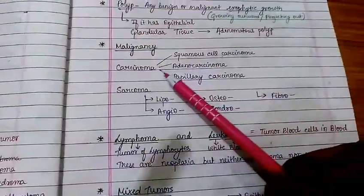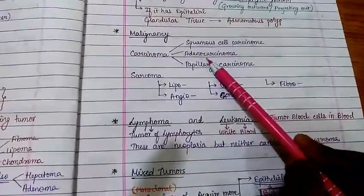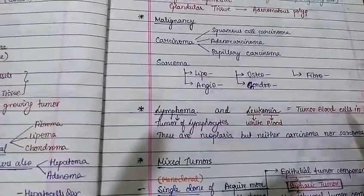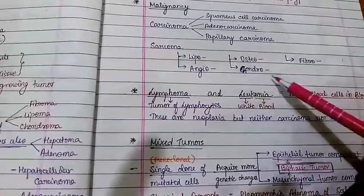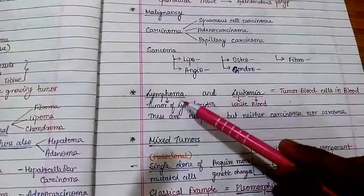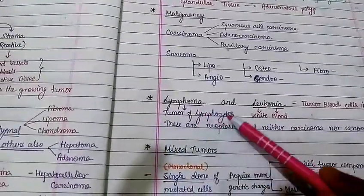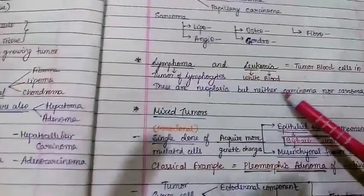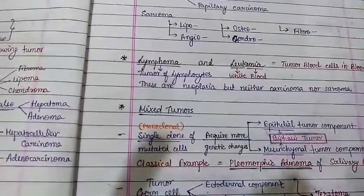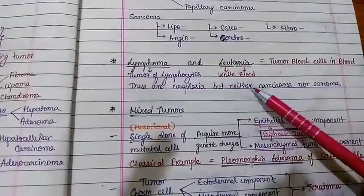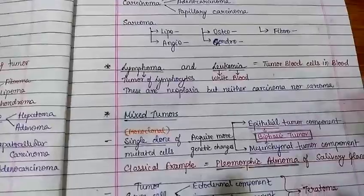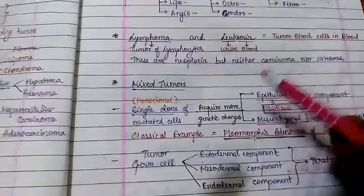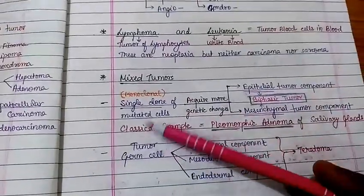For malignancy: carcinoma covers epithelial malignancy and may be squamous cell carcinoma, adenocarcinoma, or papillary carcinoma. Sarcoma covers mesenchymal malignancy — liposarcoma, angiosarcoma, osteosarcoma, chondrosarcoma, fibrosarcoma. Lymphoma is a tumor of lymphocytes and leukemia is a tumor of white blood cells. Both lymphoma and leukemia are neoplasms but they are neither carcinoma nor sarcoma.